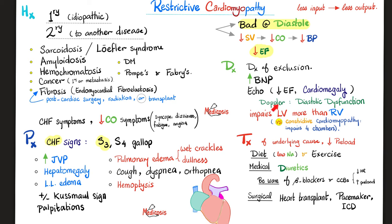On Doppler echocardiography, you will find diastolic dysfunction — the heart is impaired at diastole. There is impairment of the left ventricle more than the right ventricle, which is important because it helps differentiate restrictive cardiomyopathy from constrictive pericarditis, where all four chambers are impaired during diastole.